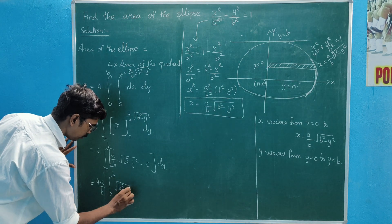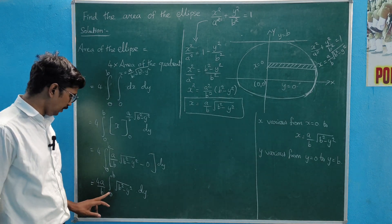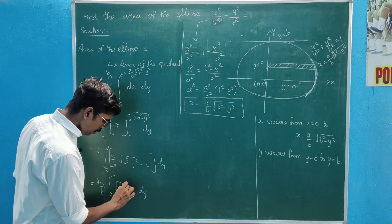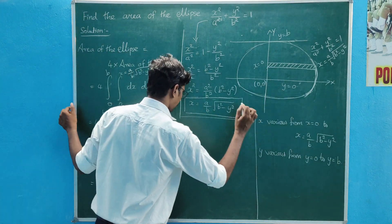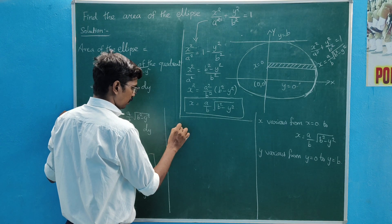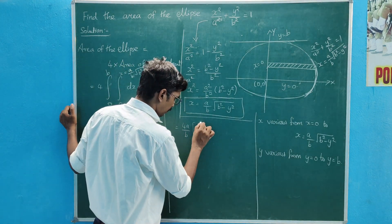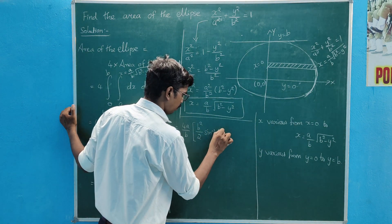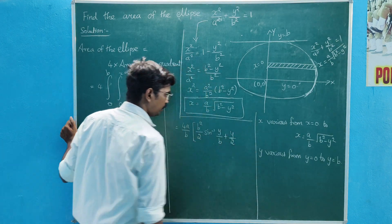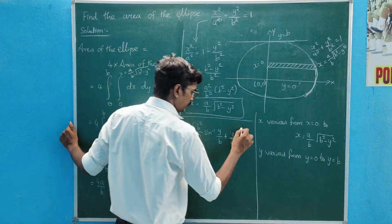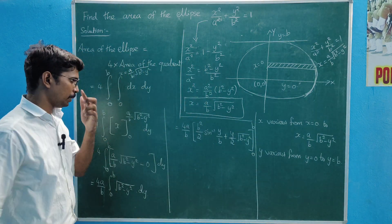This gives us (a/b)√(b² − y²) integrated with respect to dy, from 0 to b. So the expression becomes 4 × (a/b) × integral from 0 to b of √(b² − y²) dy.